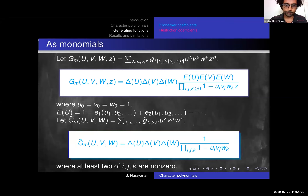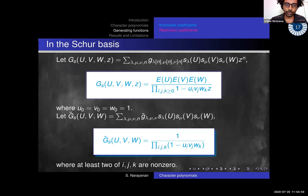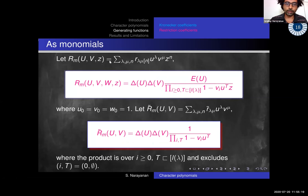We can also ask for the generating function where these coefficients are the coefficients of Schur functions S_lambda in u, S_mu in v, and S_nu in w. You can get this quite easily from the previous expressions — you just remove the delta terms and nothing else changes. This is the generating function where the Kronecker coefficients are coefficients of Schur functions.